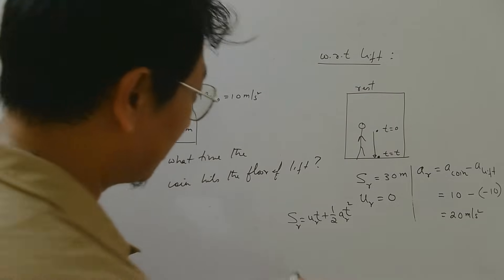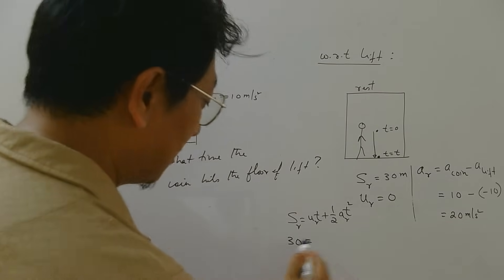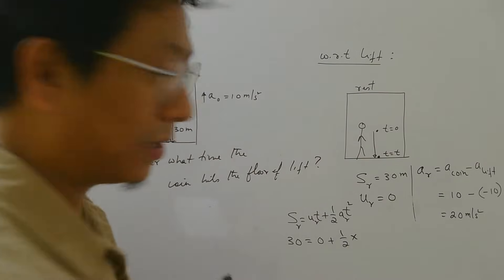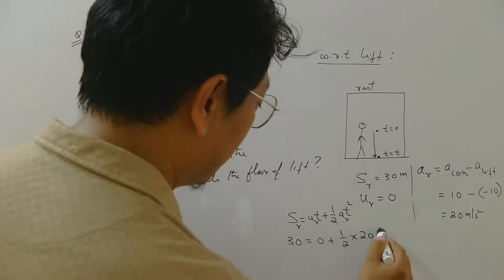So what is the relative displacement? 30. Relative initial velocity, 0. So acceleration relative is 20 into t square.